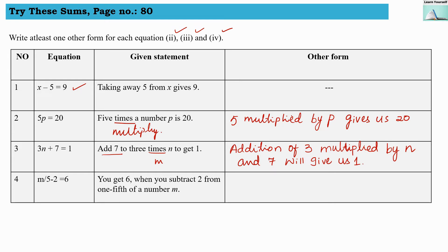So here we have combined this that 3n plus 7. So we are going to add them and will give us 1.